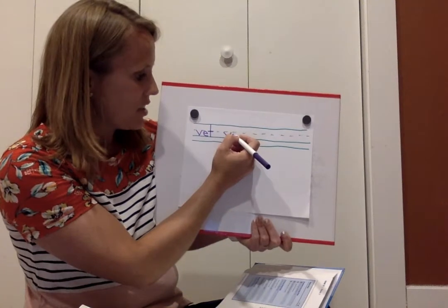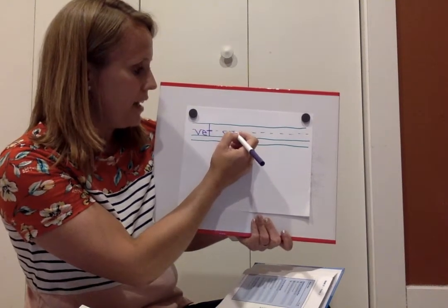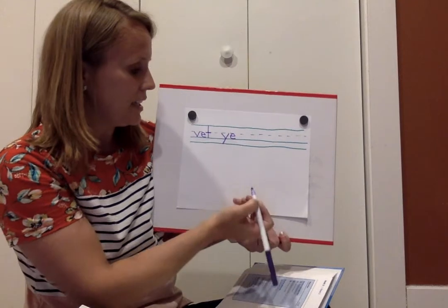For E, I start under the plain line, fly under the plain line, up to the plain line, around and land on the grass line.